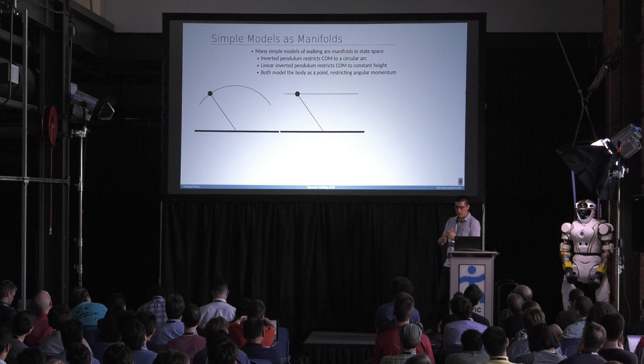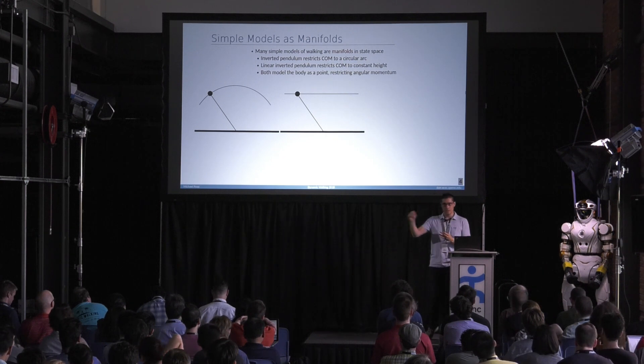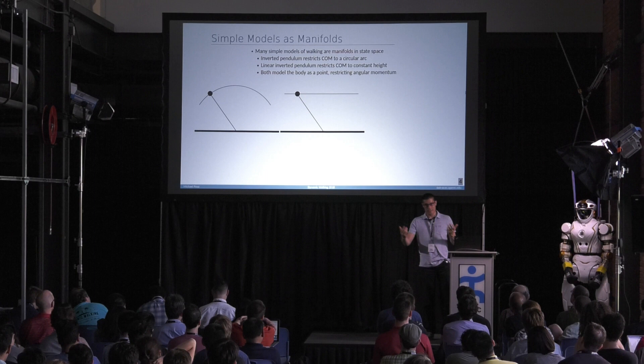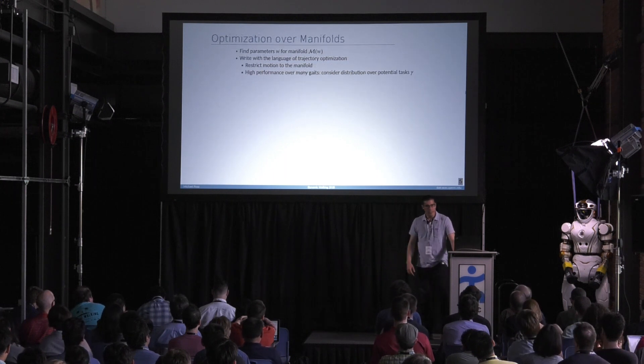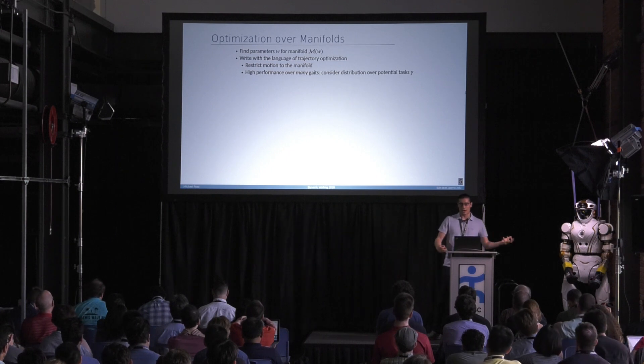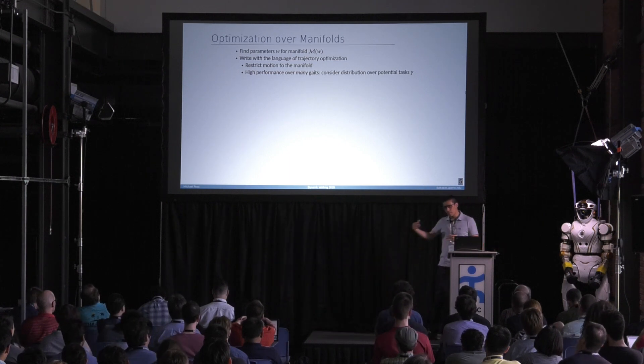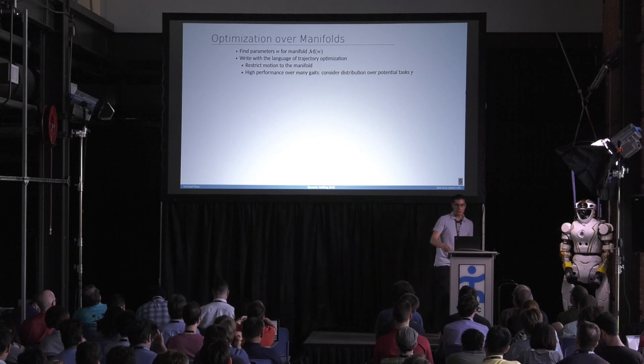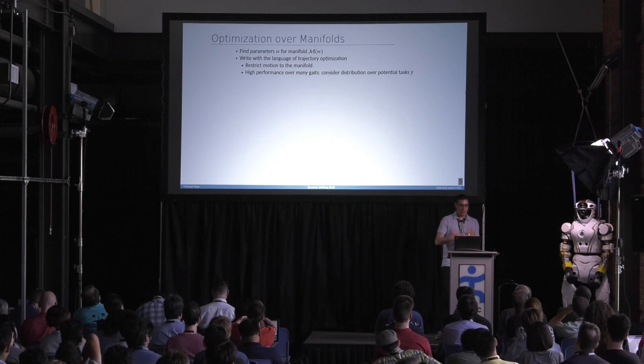Okay. So one view of thinking of these simple models is that they're really just manifolds, right? That something like the inverted pendulum just restricts your center of mass to act like an inverted pendulum, to live on this arc in state space. And the same would be true of a linear inverted pendulum model. So if you say my simple model is a manifold, well, now we can think about what's the best manifold, right? So suppose we're going to define some manifold, and we're going to say my state trajectories have to lie on it. Now, what's the best simple manifold? And we can cast that problem now as an optimization problem, right? So we're going to find some parameterization of this manifold, such that if we restrict ourselves to lie on it, then we still have good motion.